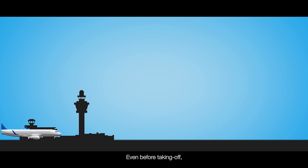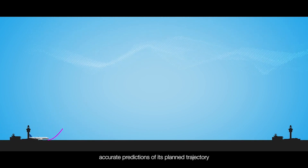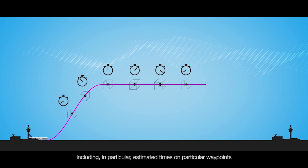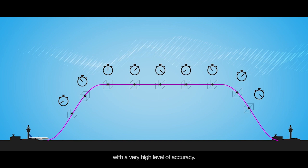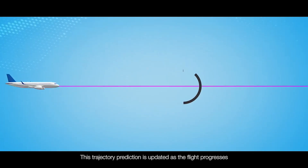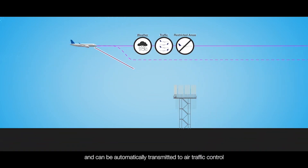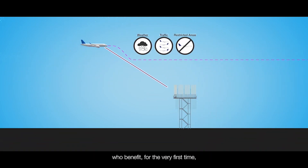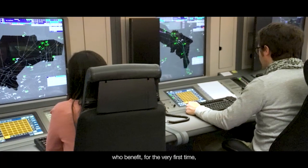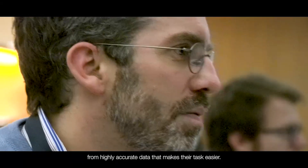Even before taking off, the aircraft is able to send accurate predictions of its planned trajectory, including estimated times on particular waypoints with a very high level of accuracy. The trajectory prediction is updated as the flight progresses and can be automatically transmitted to air traffic control, which benefits for the very first time from highly accurate data that makes their task easier.